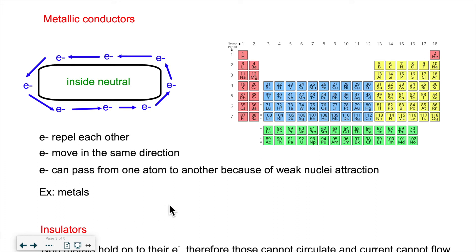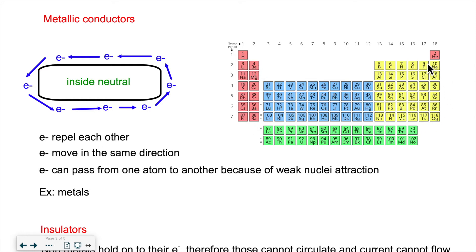Now, if we look at what conducts electricity and what doesn't, we have three categories. Let's look at the periodic table. On the left-hand side we have the metals, including transition metals. On the right we have the non-metals, and somewhere in between we have the metalloids or semi-metals. Metals have, in general, fewer protons than their counterparts in the same period — the non-metals.